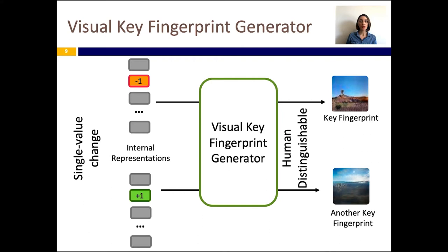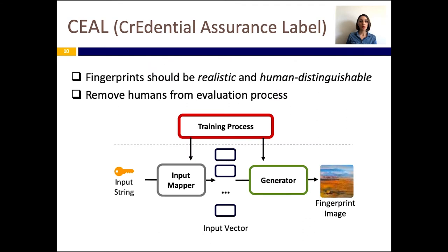Ideally, we want the GAN image generator to generate key fingerprint images that are easily perceived as different by humans, even for a pair of input vectors that are different only in a single component. To address this requirement, we introduce SEAL, a credential assurance label system, that extends the DC-GAN architecture for image generation with a novel training process that ensures the generated images are not only realistic but also human distinguishable. However, asking humans to evaluate the generator output during training is expensive and does not scale well. We therefore seek to eliminate the requirement of labeling images using humans during the training process.